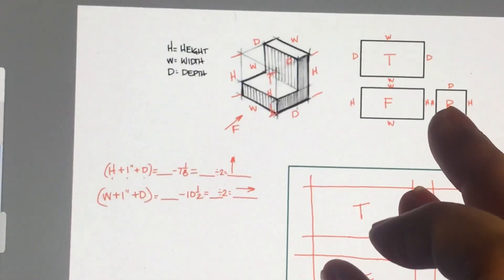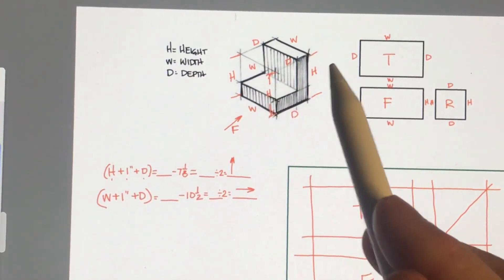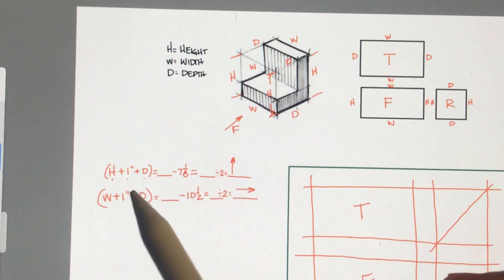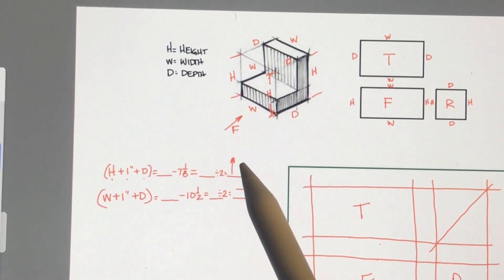So you have to get used to finding the height, the width, and the depth of the part, plugging those numbers into the formula and getting the answers to your offsets.